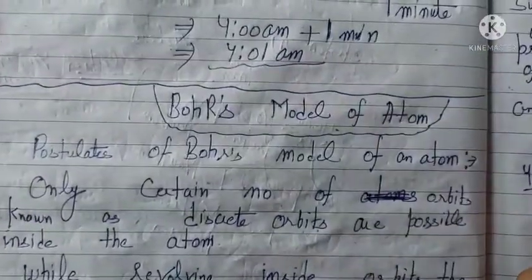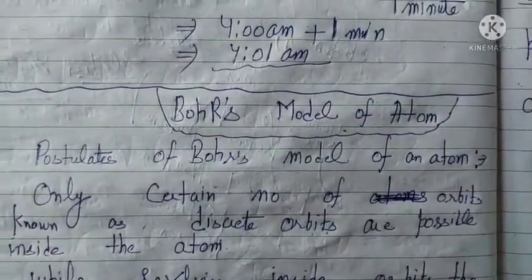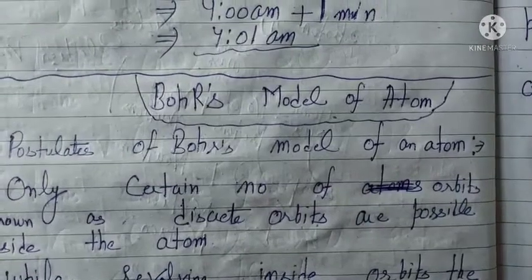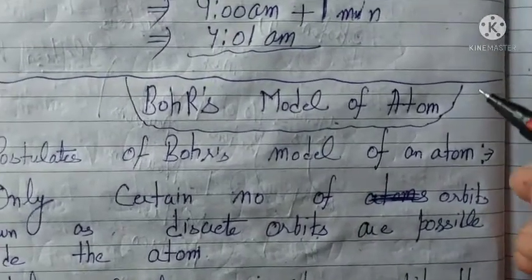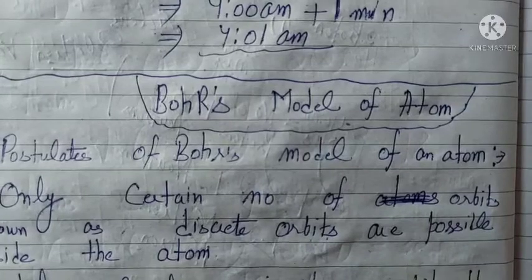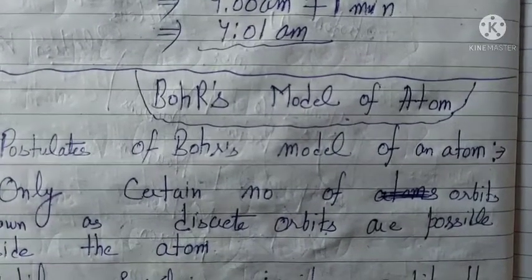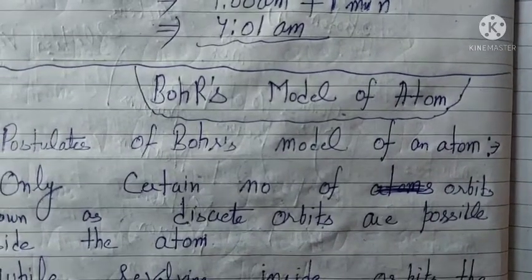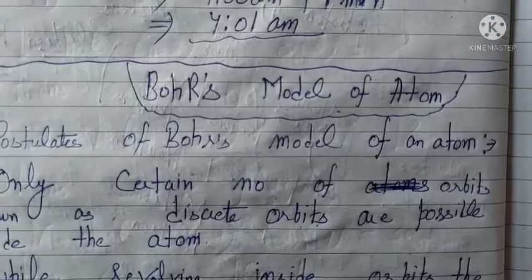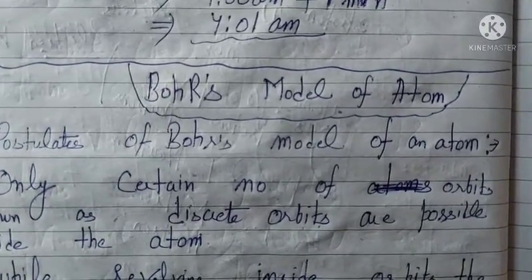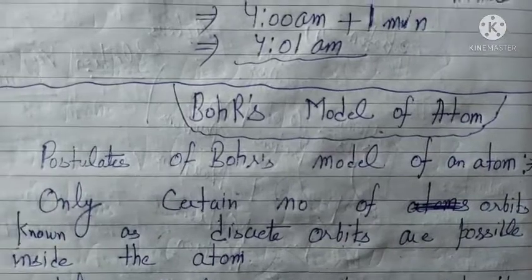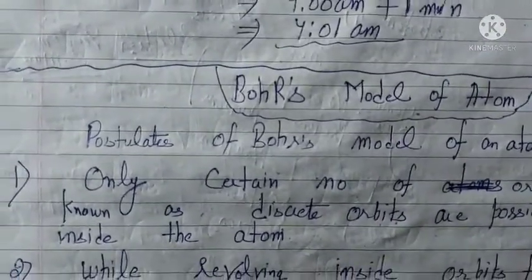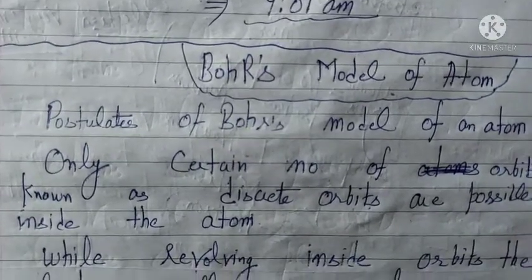Good morning students. Today we are starting with our next video lecture. The chapter name is Structure of the Atom and the subtopic is Bohr's model of an atom. Rutherford gave the postulates for the structure of an atom but he also had some drawbacks, and those drawbacks are somehow removed by Bohr's model of an atom. We will discuss what are the postulates of Bohr's model of an atom.